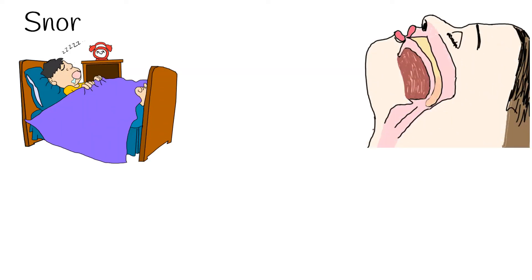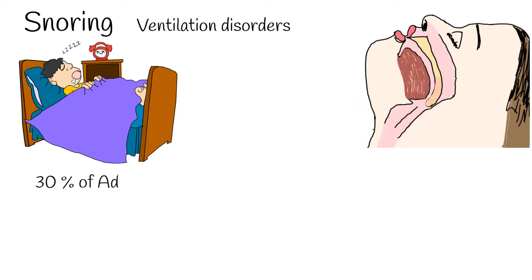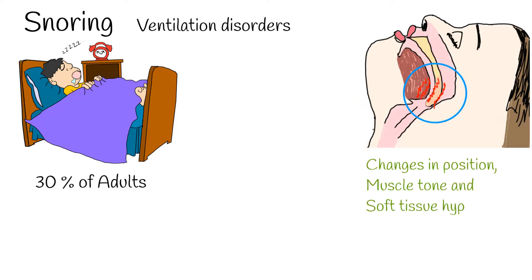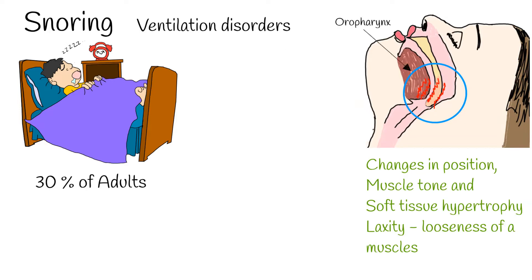Ventilation disorders during sleep are very common, affecting around 30% of the general population. The main mechanism of snoring is narrowing of the upper aerodigestive tract during sleep, due to changes in position, muscle tone, and soft tissue hypertrophy or laxity of the muscles. The most common areas of obstruction are the oropharynx and the base of the tongue.